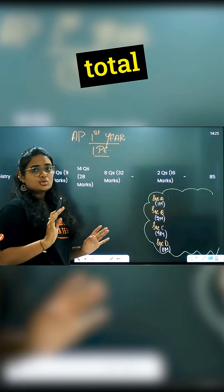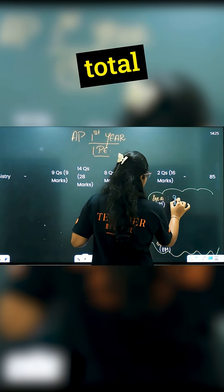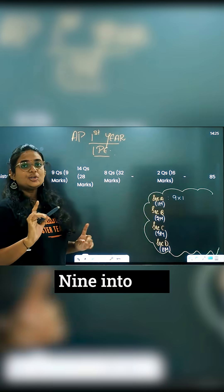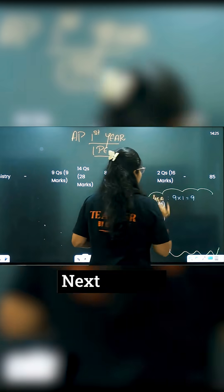In Section A, there are 9 questions. 9 into 1, so total 9 marks.